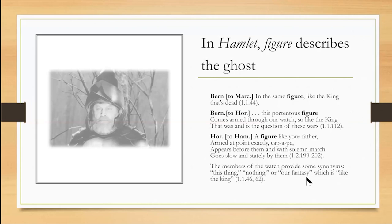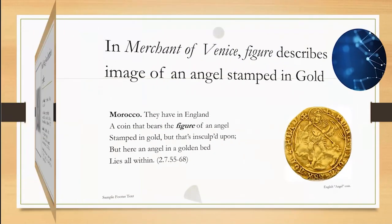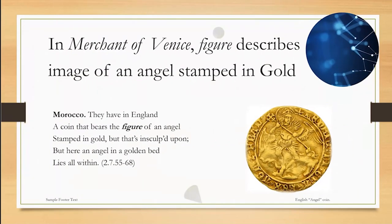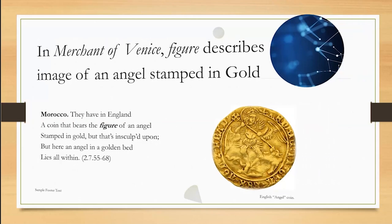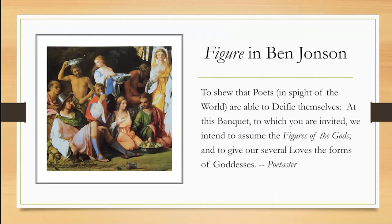The members of the watch in these first scenes provide some interesting synonyms. The figure is 'this thing.' It's 'nothing.' It's 'our fantasy.' It is like the king, but it is not the king. In Merchant of Venice, we find the image of an angel stamped in gold. Morocco says: 'they have in England a coin that bears the figure of an angel stamped in gold, but that's inscribed upon.' But here, referring to Portia, 'an angel in a golden bed lies all within' — suggesting that Portia also may be a figure and not a real woman.